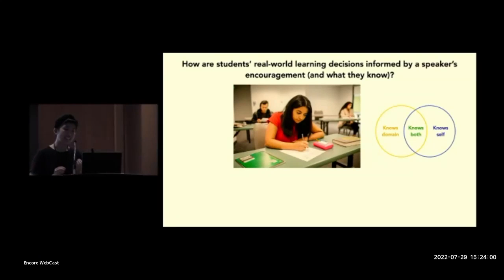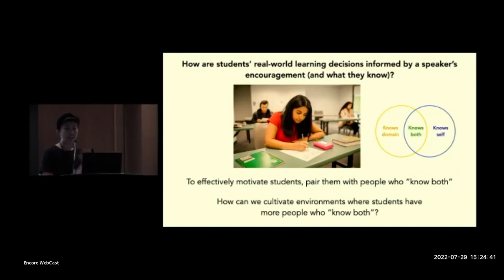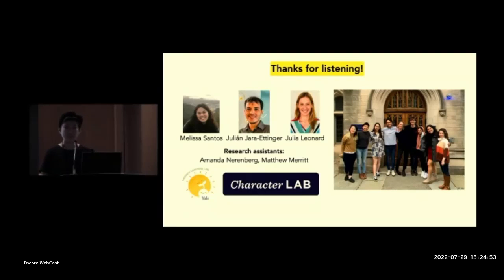Okay, and an important next question for us is asking how these effects show up in real-world behaviors. How are students' actual learning decisions informed by who provides them with motivational feedback and what that person knows? And more broadly, I think what our findings suggest is that in order to effectively motivate students, it may be really important to pair them with people who know both about the domain and about their abilities. And, of course, what this assumes is that there are these people in students' lives, which isn't always the case. And especially as we all get more specialized in what we study, there may be fewer and fewer of these people that are out there for us. And so I think what is a really important question for all of us to think about as mentors and mentees is, well, how can we best build and cultivate environments where students have more access to people who know both? I don't have the answers to this question, but I'll end here and thank my collaborators and you all for listening. And I'm happy to take any questions now. Thank you.